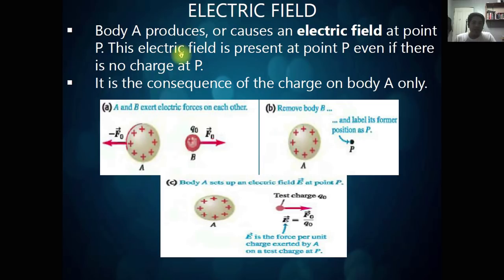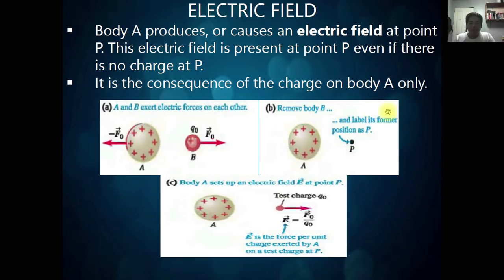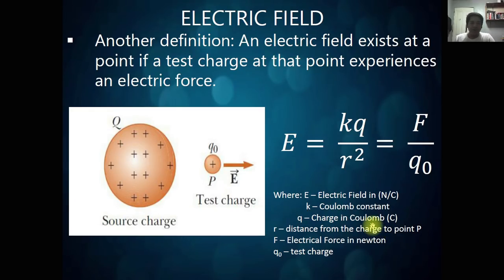Body A produces an electric field at point P. This electric field is present at point P even if there is no charge at P. If you have a single charge, there will always be the presence of an electric field, regardless of what charge it is — positive or negative. It is the consequence of the charge on body A only. Another definition: an electric field exists at a point if a test charge at that point experiences a force.